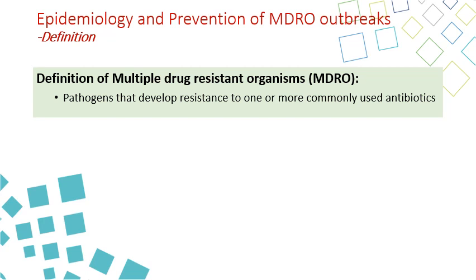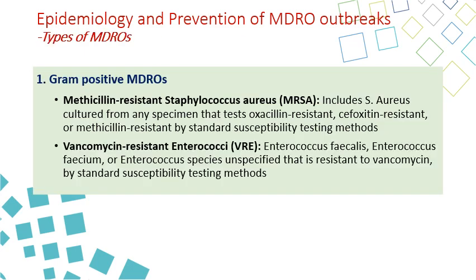For the definition of MDRO, any pathogen that develops resistance to one or more commonly used antimicrobials is considered an MDRO. These include gram-positive and gram-negative. Gram-positives include MRSA and VRE. MRSA is a Staph aureus cultured from any specimen that is resistant to oxacillin, cefoxitin, or methicillin by standard susceptibility testing. For VRE, it is any Enterococcus faecalis, Enterococcus faecium, or Enterococcus species that is resistant to vancomycin. Although VRE is tested resistant only to vancomycin and MRSA to methicillin or similar drugs, they are resistant to multiple other drugs — that's why they are considered MDRO.